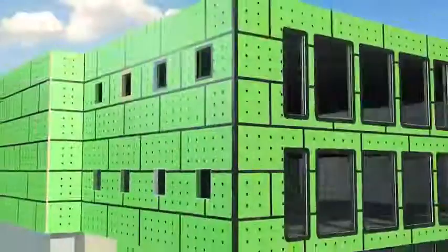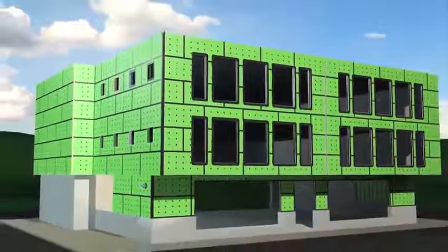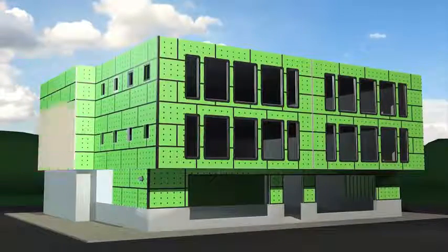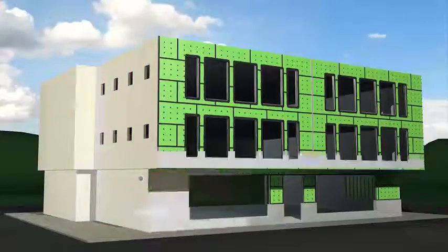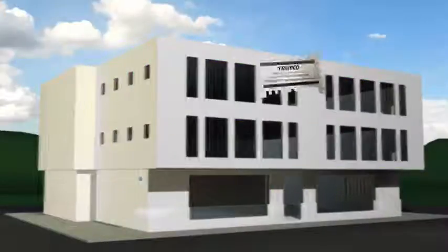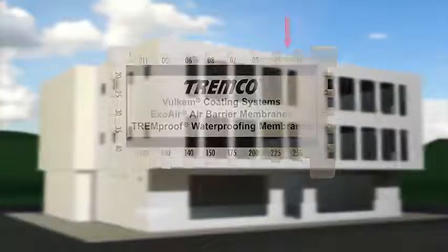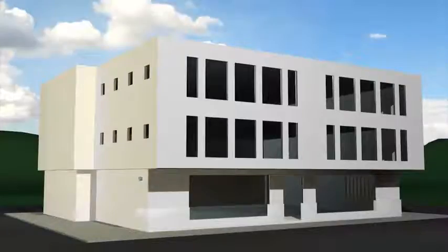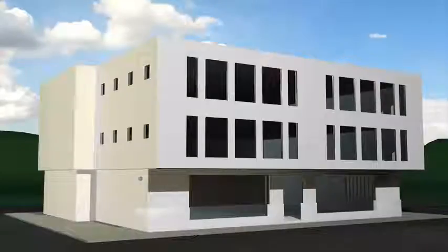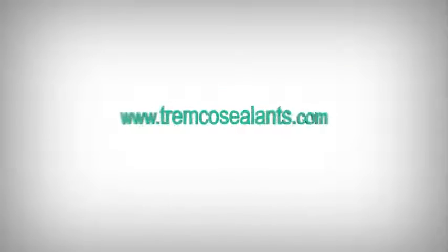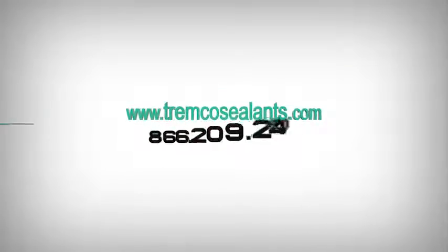Once all the detailing is completed, the ExoAir 230 fluid can be either sprayed or rolled over the remaining surfaces. The mil thickness for concrete is 70 wet mils and 48 wet mils for exterior sheathing. For complete application instructions, including clean-up tips, alternate methods, and common industry application issues, please visit our website at www.tremcosealants.com.